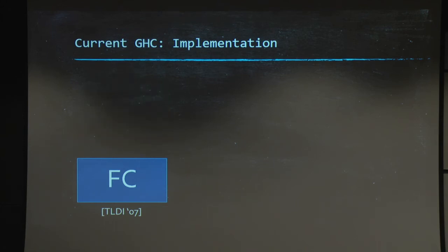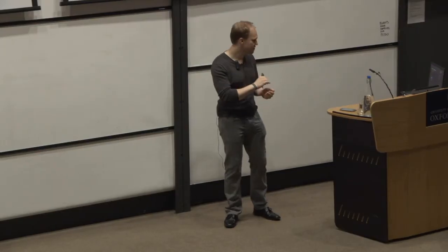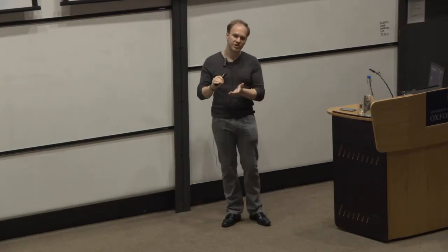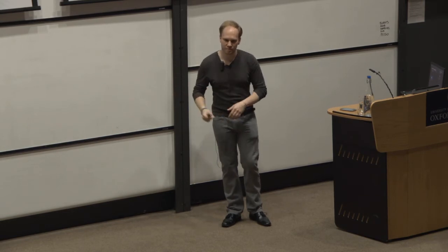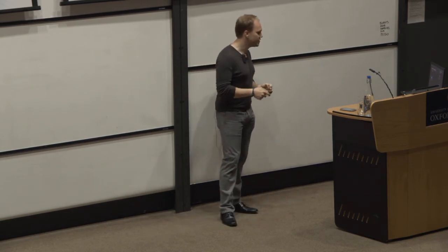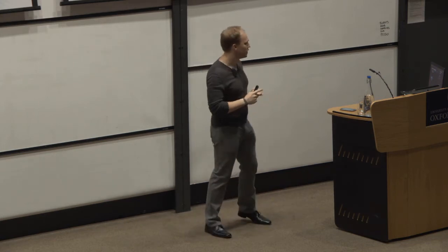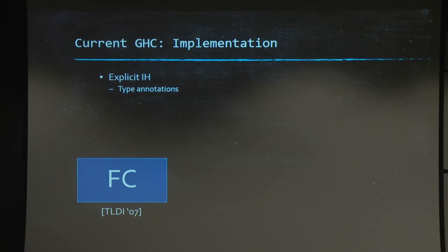Just briefly on the features of FC. So, as I said, it's an explicit IH. That is, you can think of any term in FC as the encoding of a type derivation of an IH term. And for this, we need some annotation, type annotations first. We need annotations in particular on the lambdas. Explicit type applications as well.